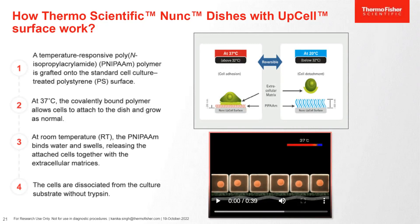Thermo Fisher offers a specialized surface called NUNC UpCell surface, which is a temperature-responsive surface that helps in the fabrication of cell sheets. This surface is coated with a temperature-responsive polymer, which has a special property to allow cells to attach at 37 degrees Celsius. Once you keep the surface outside at room temperature at around 20 to 22 degrees, the polymer allows the cells to dissociate from it. You do not need to add any trypsin or other dissociation reagents — just by reduction of temperature, you can take off your cells. Along with the cells, the ECM also comes off, so the cells dissociate along with their ECM.